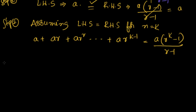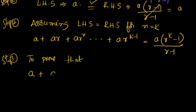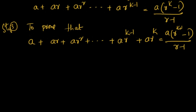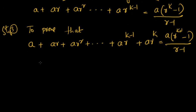Now once we have assumed this, we have to prove — Step 3. We have to prove that a plus ar plus ar squared, plus the kth term ar to the power of k minus 1, plus the k+1th term ar to the power of k, is equal to a into r to the power of k plus 1, minus 1, by r minus 1. This is what we have to prove — LHS is equal to RHS.